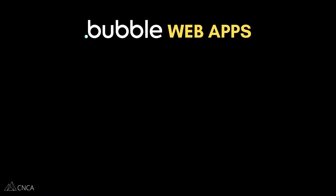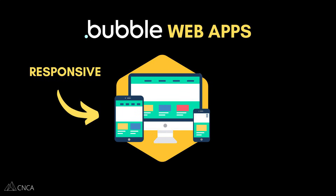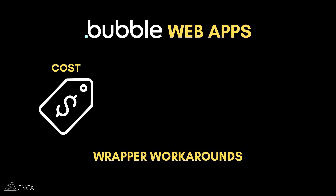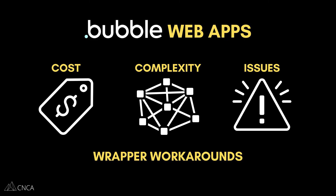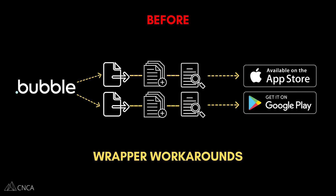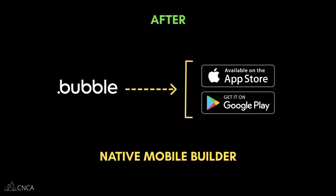Let's talk about why this release matters. Until now, building a mobile app in Bubble meant finding a workaround. You'd build a responsive web version and then either live with it being browser-based, or pay for a wrapper service like BDK or Natively. These worked, but they added cost, complexity, and more places for things to break. Plus, publishing to the App Store or Google Play always meant exporting files, compiling them, and following platform-specific steps — not easy for non-technical builders. This release simplifies both the build and the deployment process by bringing it all into one place.